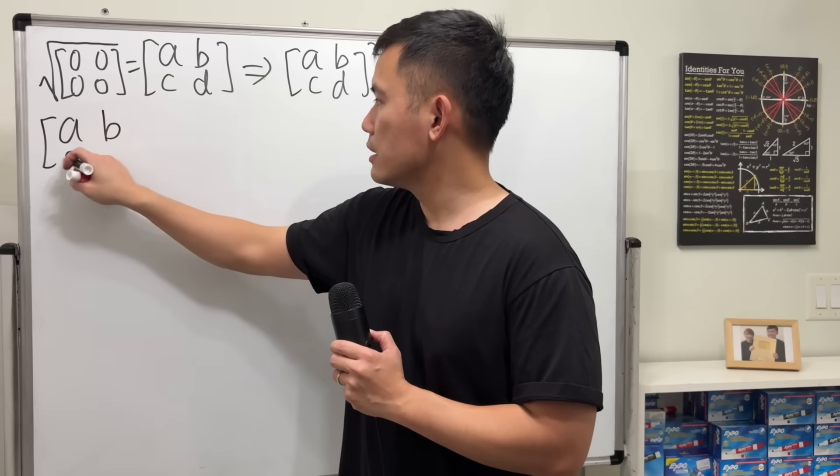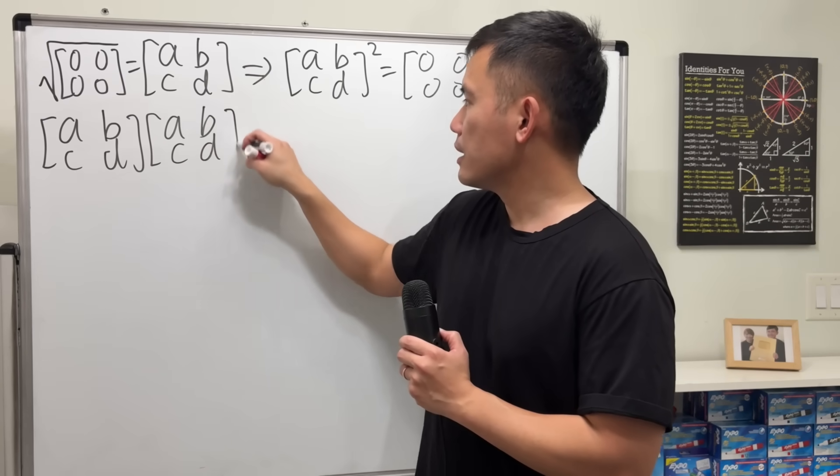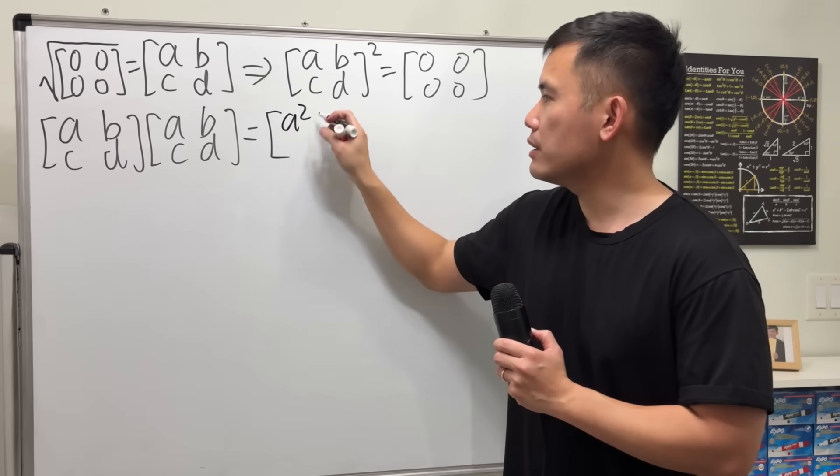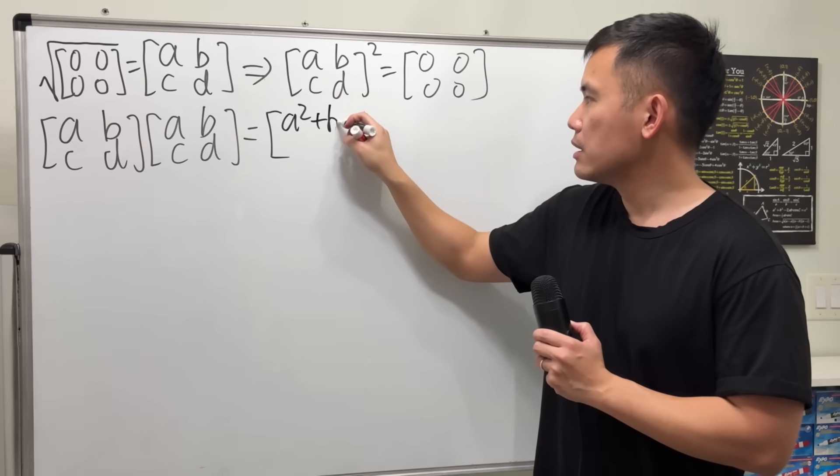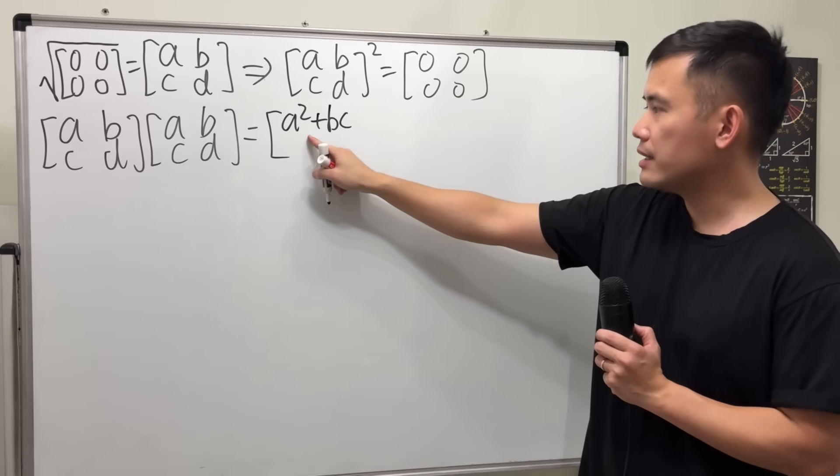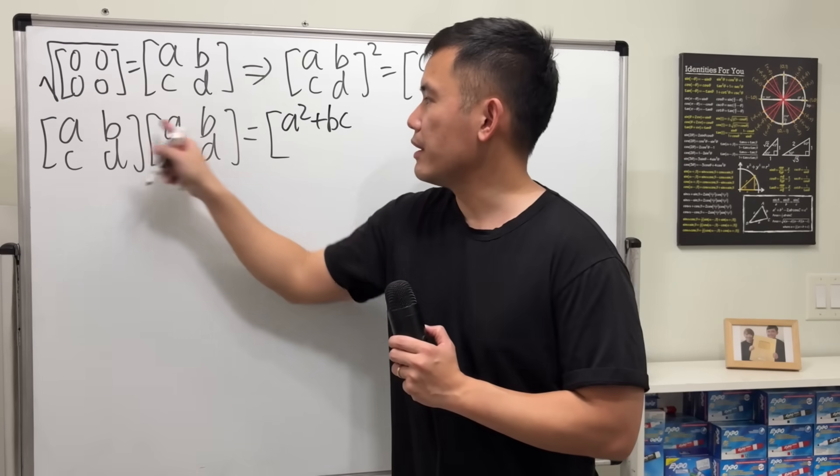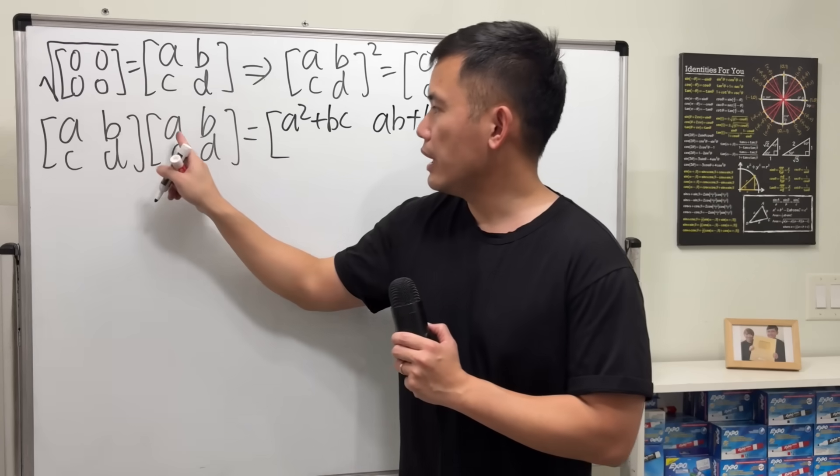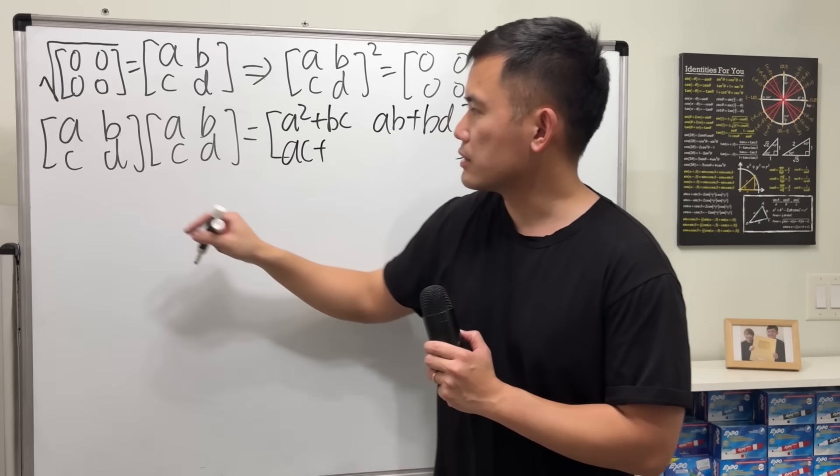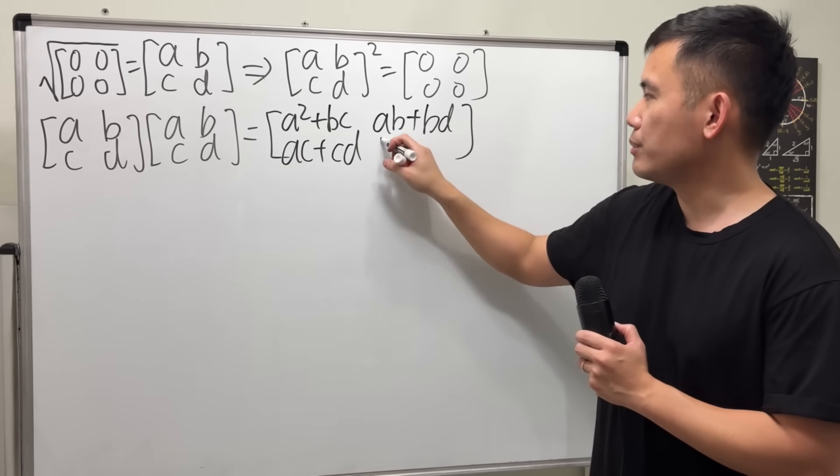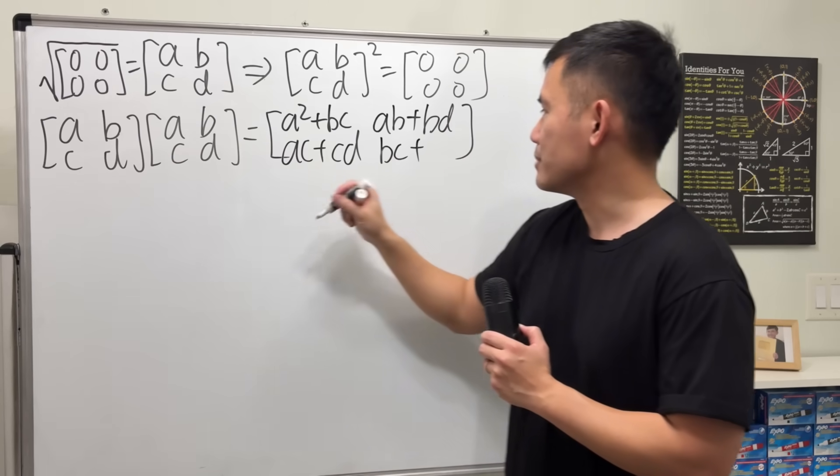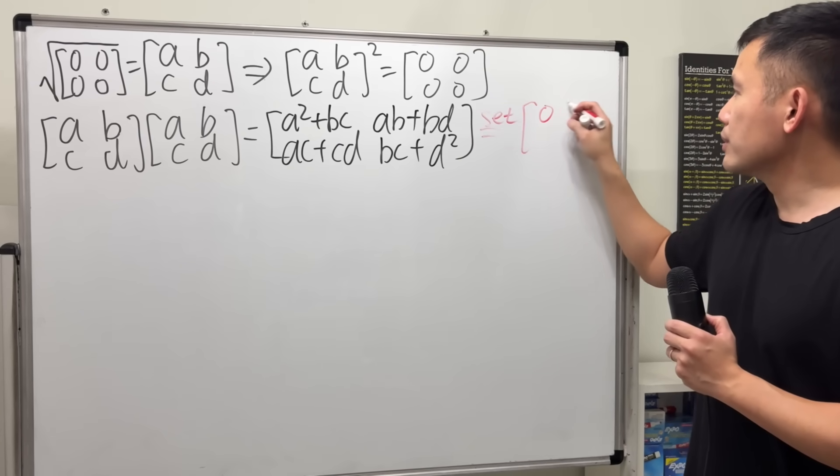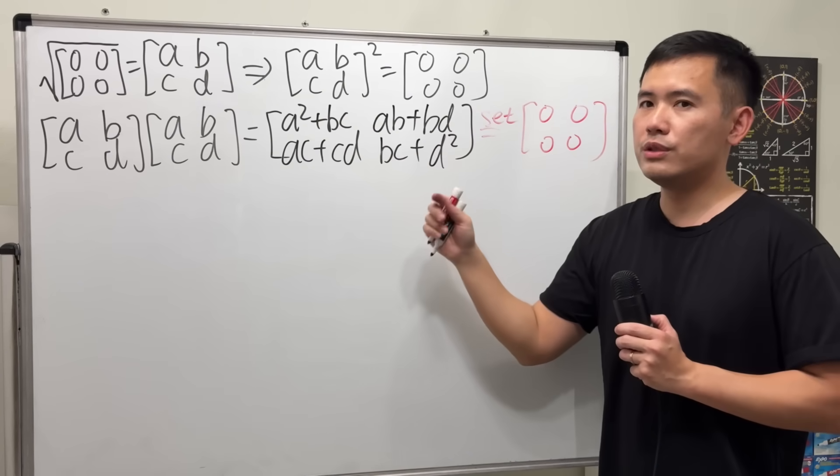So now let's just go ahead and expand this. That is [a, b; c, d] times [a, b; c, d]. And just do what we did earlier. We will have to do the dot product of this and that. So a times a, which is a squared, plus b times c. This is the first entry, and we will have to make it equal to that. And then we do the same thing. So we have ab plus this time bd. Continue, ac plus this time cd. And lastly, bc, and then d times d, which is d squared.